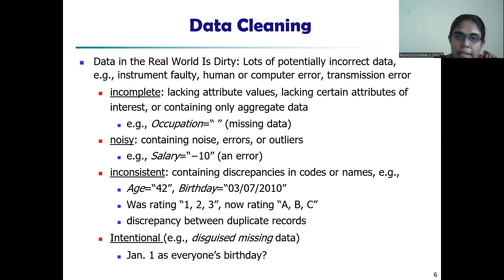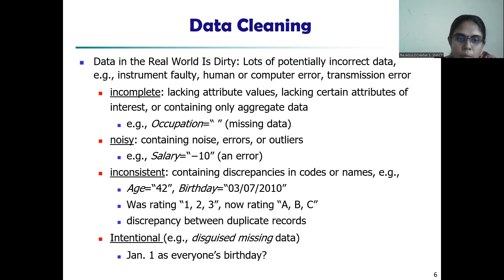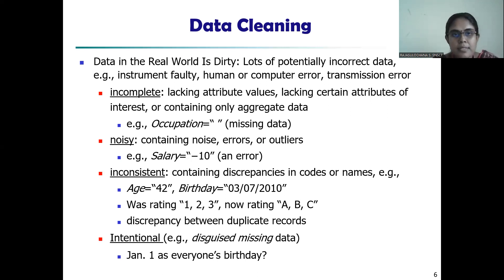By means of noisy data, if there are any errors or outliers present in the data — for example, if we consider the salary of an employee and the data is entered as minus 100, the salary can never be negative, so this is considered noisy data and must be removed. By means of inconsistencies, the data may be present in different formats in different databases. For example, in one database the age is stored as 42, and in another the birthday is stored in date-month-year format — that can be considered inconsistent. Additionally, if a dropdown list has a default value like Jan 1 for everyone's birthday and the user does not change it, though a value is present it is not correct — this is intentionally left dirty data and must also be removed.